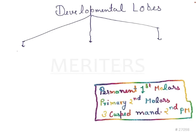Generally there is a question asked in exams: what is the minimum number of lobes required for the formation of a complete tooth? And the answer is one lobe. The least number of lobes required for the formation of a tooth is one lobe, and that gives rise to your primary incisors. So your primary incisors arise from one lobe only.